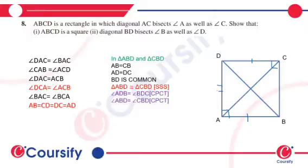Diagonal BD, this diagonal bisects these angles. And like in the similar previous question, we have given that AC bisects angle A as well as C, that means angle DAC equals angle BAC and angle DCA equals angle BCA.